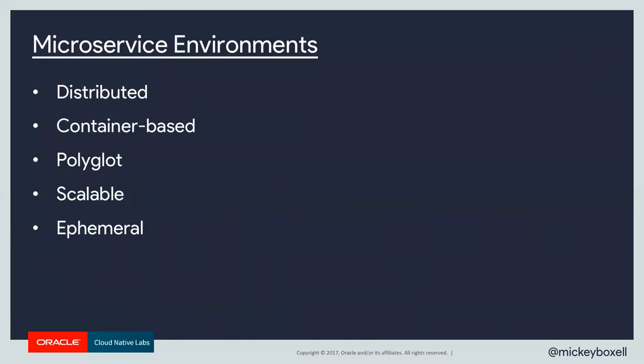To level set: microservice environments are a bit different from traditional monolithic ones. The adoption of container-native and cloud-native development practices presents new operational challenges. These microservice environments are deployed on container-orchestration platforms like Kubernetes, they're polyglot, distributed systems where containers are the primitive of choice, and they're highly scalable and ephemeral. This has an impact on the way we operate services and also in the way we develop them.